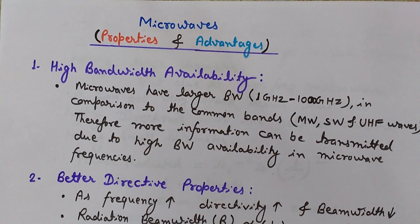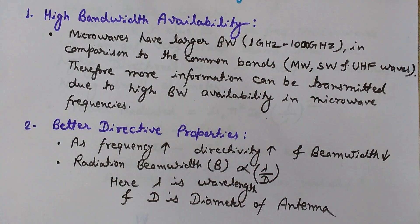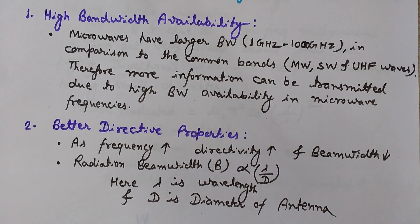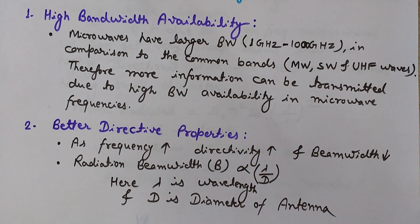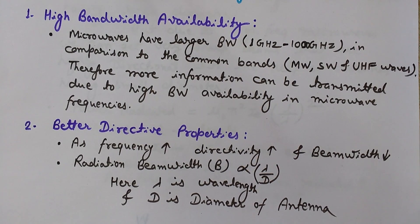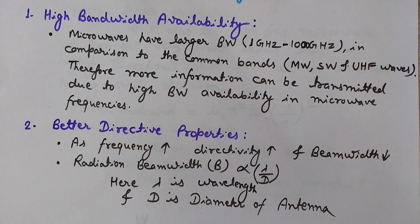The second property of microwaves is better directive properties. Directive properties means if some wave has more directive properties then its beam width is low. As the frequency increases, the directivity increases — the beam becomes more directive because its beam width decreases.